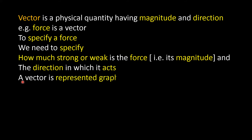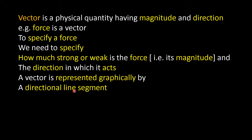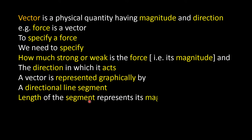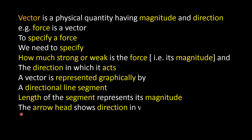A vector is represented graphically by a directional line segment. The length of the line segment represents its magnitude, and the arrowhead shows the direction in which the vector acts.